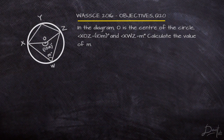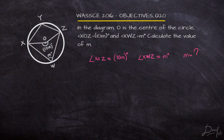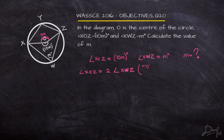Now looking at the next question, we are asked to find the value of M. We are given the angle at the center as 10M facing downwards and the angle at the circumference as M degrees facing upwards. Applying our principles of circle geometry, we know that the angle subtended at the center of the circle is twice the angle subtended at the circumference. That means angle XOZ is going to be twice angle XWZ, giving us 2M.